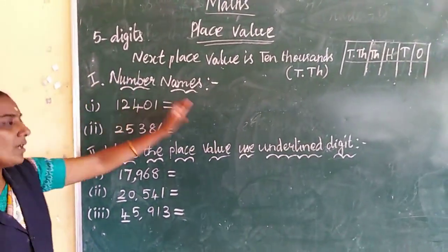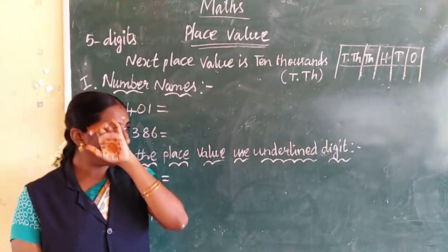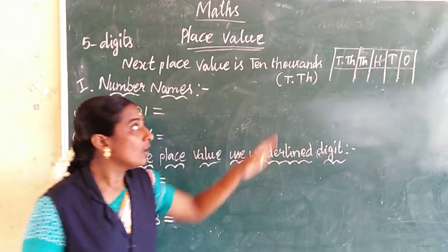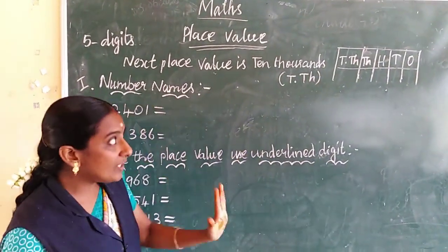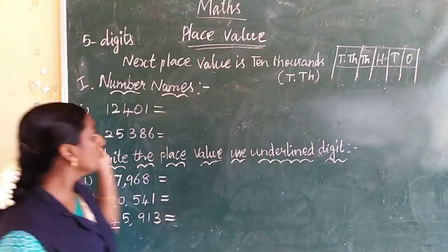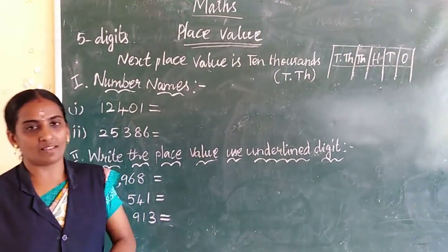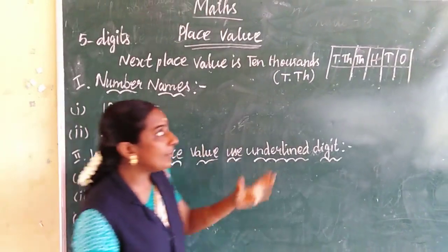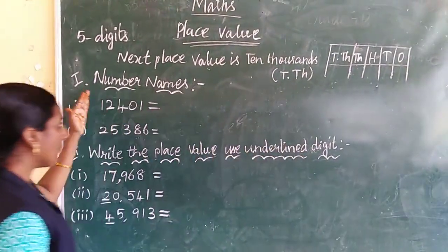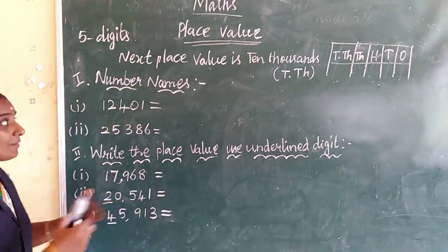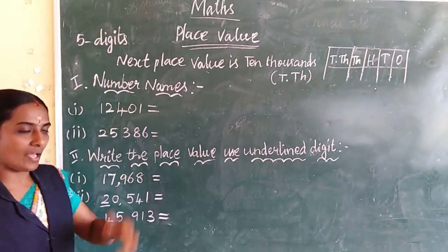First one — numbers names. When we write a number without using a chart, we use a comma to separate place values. Now if we write without a chart and need to separate numbers by place value, how do we separate the number?